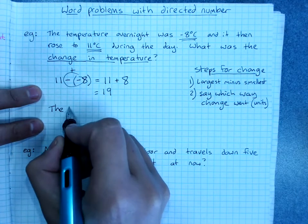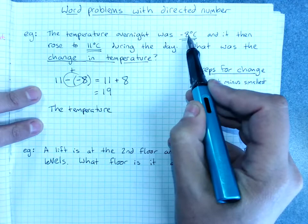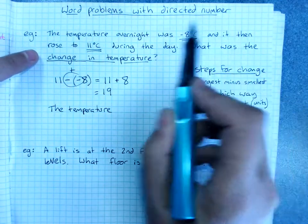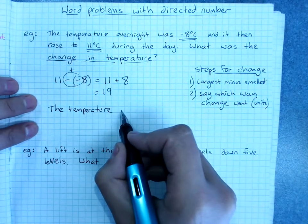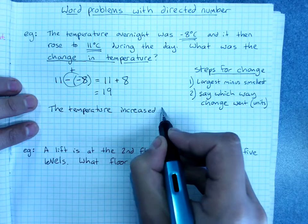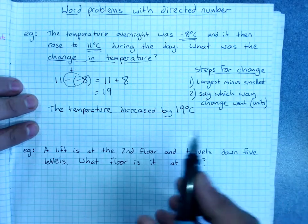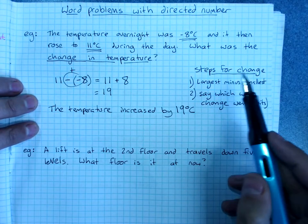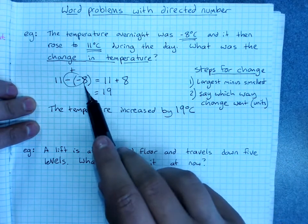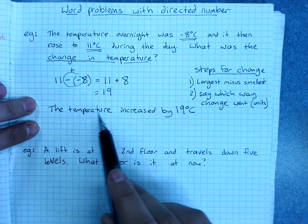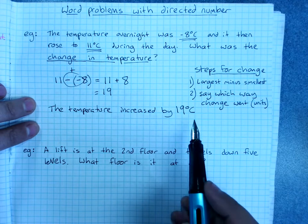So you say the temperature, now it was negative 8, that's pretty cold, and it rose to 11 degrees. So the temperature rose or increased by 19 and we're in degrees Celsius. So you say degrees Celsius. So when it's change it's largest minus smallest and make sure you get your signs right and then write a sentence where you say what the change was, whether it was up or down, and what the units were.